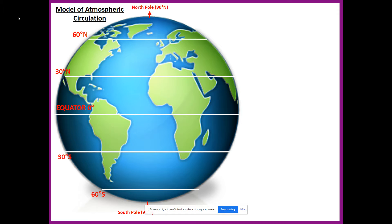Anywhere on the Earth's surface where you get air falling towards the surface, you get an area of high pressure. High pressure brings very different weather conditions — you often get dry, settled weather, cloudless skies, and very little rainfall. So high and low pressure bring very different conditions. Low pressure occurs when air is rising from the Earth's surface up into the atmosphere; high pressure occurs when air is descending from the atmosphere towards the Earth's surface.